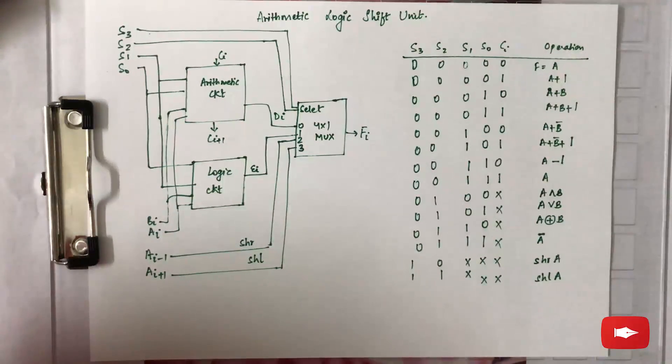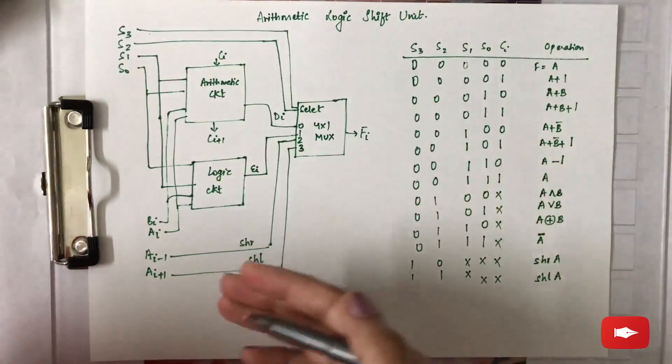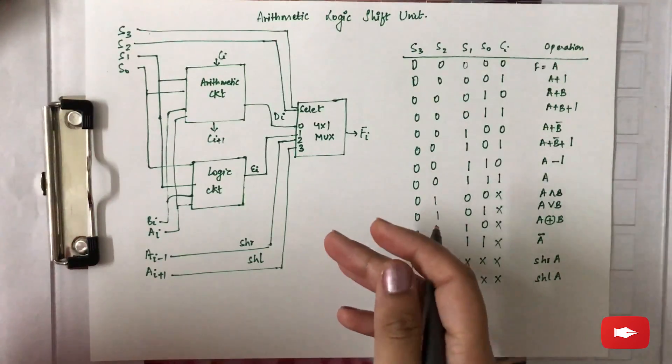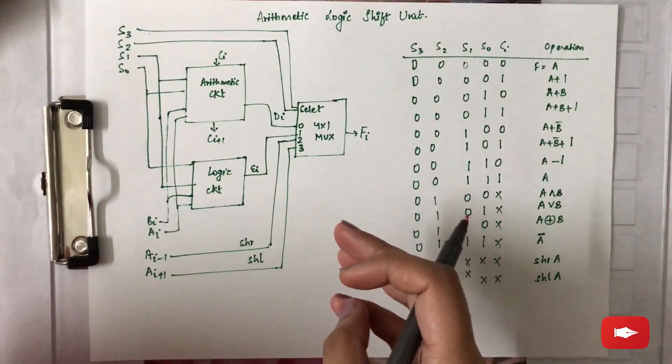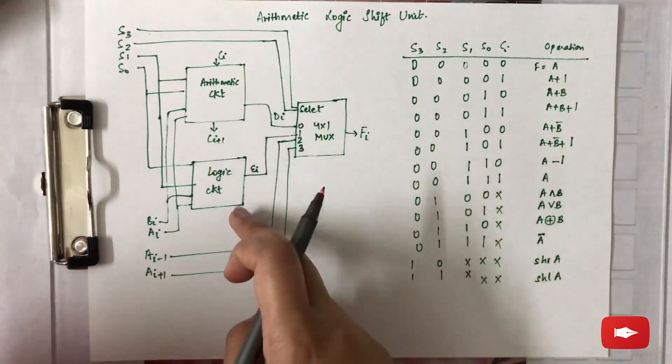The topic for this video is arithmetic logic shift unit. As you can see the diagram, this is a combinational circuit which performs all three arithmetic, logic, and shift micro-operations. There is an arithmetic circuit and logic circuit.